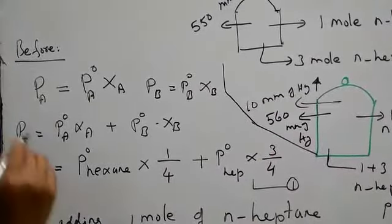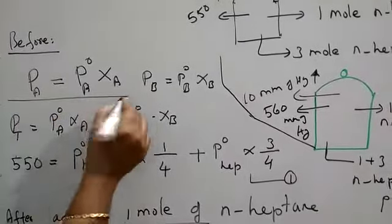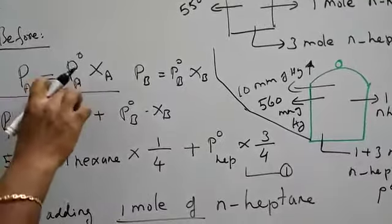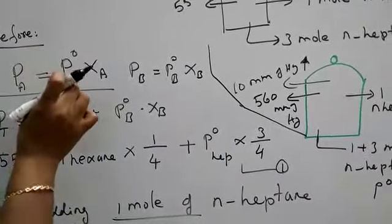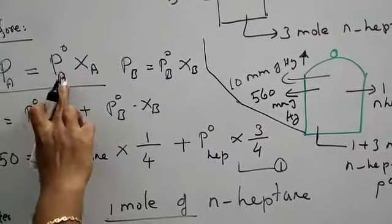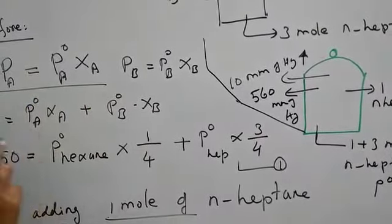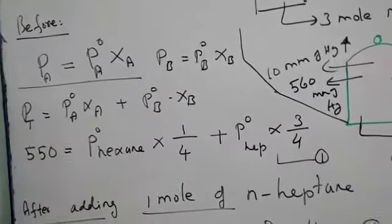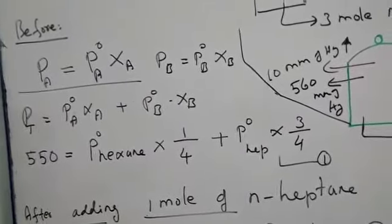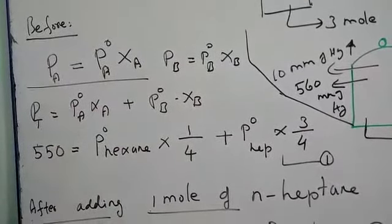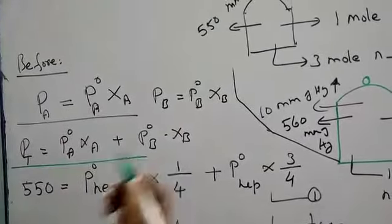The law is that the vapor pressure of the solution is equal to vapor pressure of the pure solvent times mole fraction. This is for A and this is for B. Now the container is having 2 solutions, so total vapor pressure is equal to addition of both.